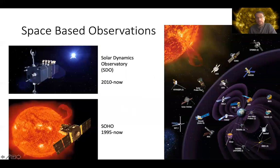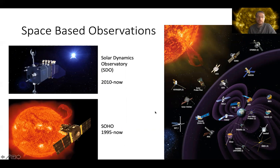We have a lot of satellites, for example from NASA and other participants, that observe the sun 24/7. The most important is, of course, the SDO mission that was launched in 2010, operates till now, and captures images with very high resolution. We also have the legacy SOHO mission for older data.